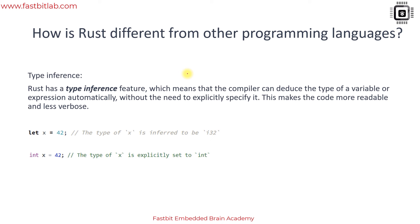One more interesting feature - some of the modern programming languages have this feature like type inference. Rust also has a type inference feature which means that the compiler can deduce the type of a variable or expression automatically without the need to explicitly specify it.